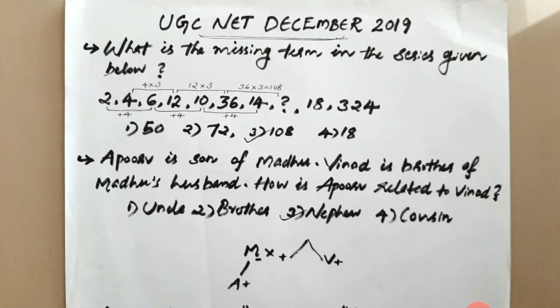The next question is: Apoor is son of Madhu. Vinod is brother of Madhu's husband. How is Apoor related to Vinod? If it comes to blood relations, it will be simple. There is no confusion here. The names are A (Apoor), M (Madhu), V (Vinod) — all starting with different letters.